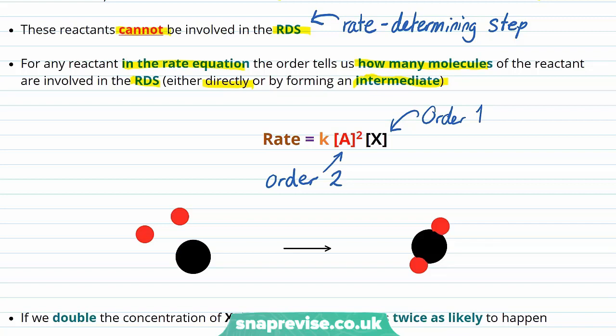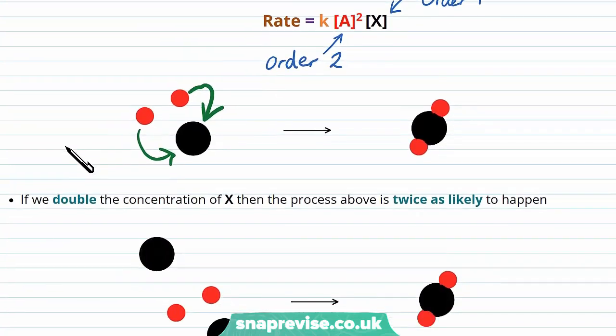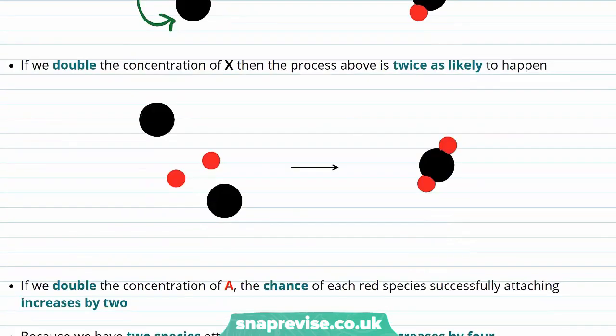A simple reaction mechanism for the rate determining step here could be that the two molecules of reactant A combine onto reactant X to form some other molecule here. Let's think about how changing the concentrations affects the rate via the mechanism. If we double the concentration of X, then the process we've listed above is twice as likely to happen. There are twice as many molecules of X about, so the reaction process shown above is twice as likely to happen. The molecules of A have twice as many molecules of X to find.